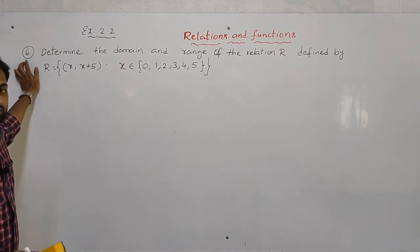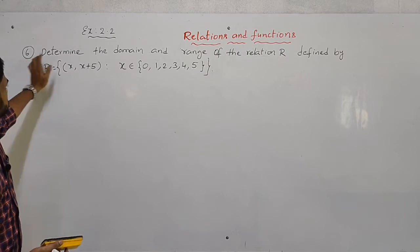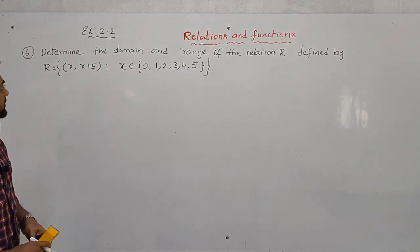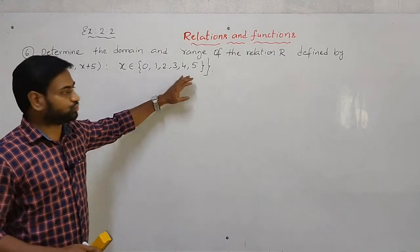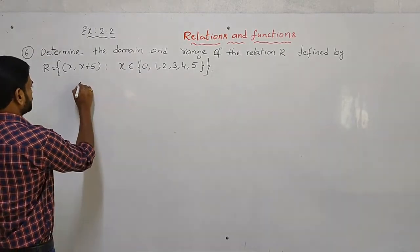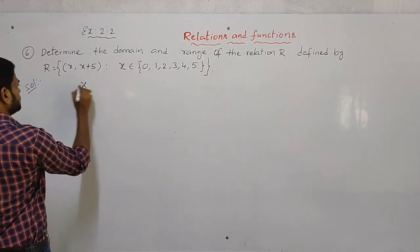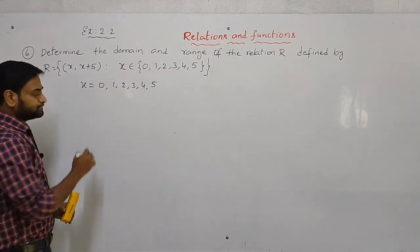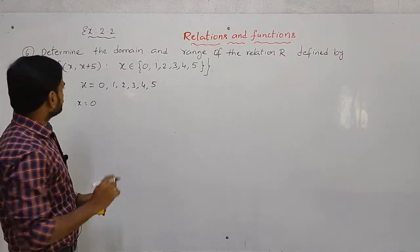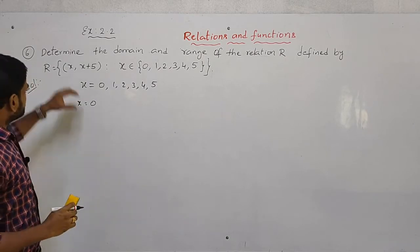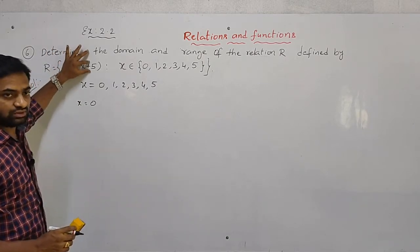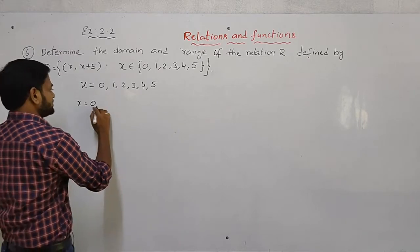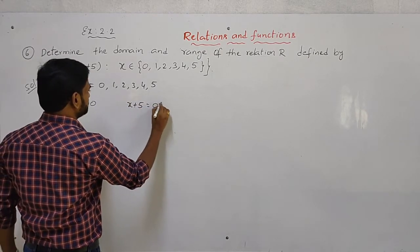Problem 5: Determine the domain and range of the relation R defined by R = {(x, x+5)}, where x ∈ {0, 1, 2, 3, 4, 5}. We list the x values and compute x plus 5 for each. When x = 0, x + 5 = 5. When x = 1, x + 5 = 6.